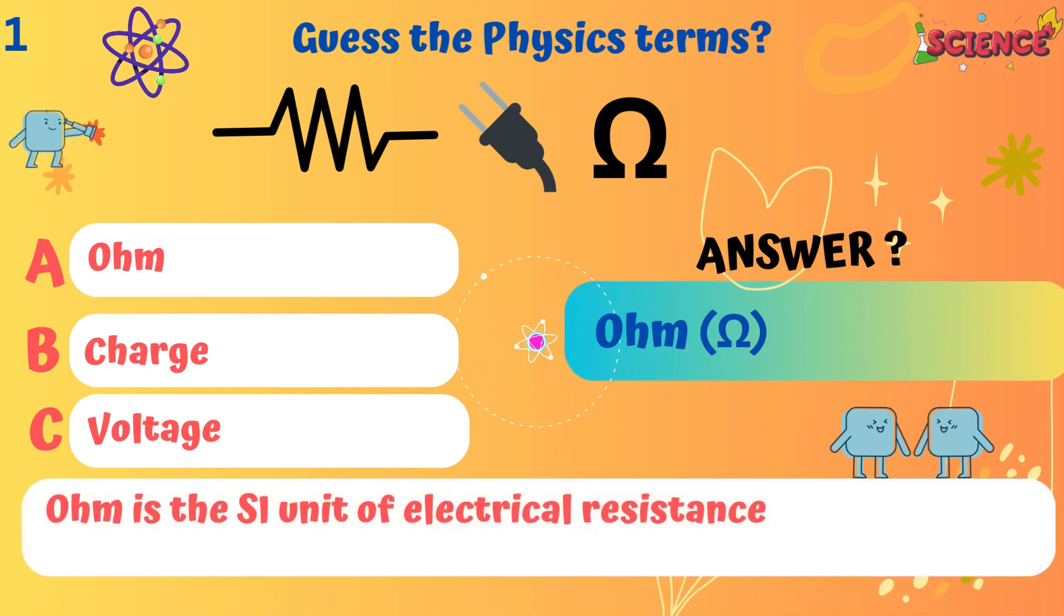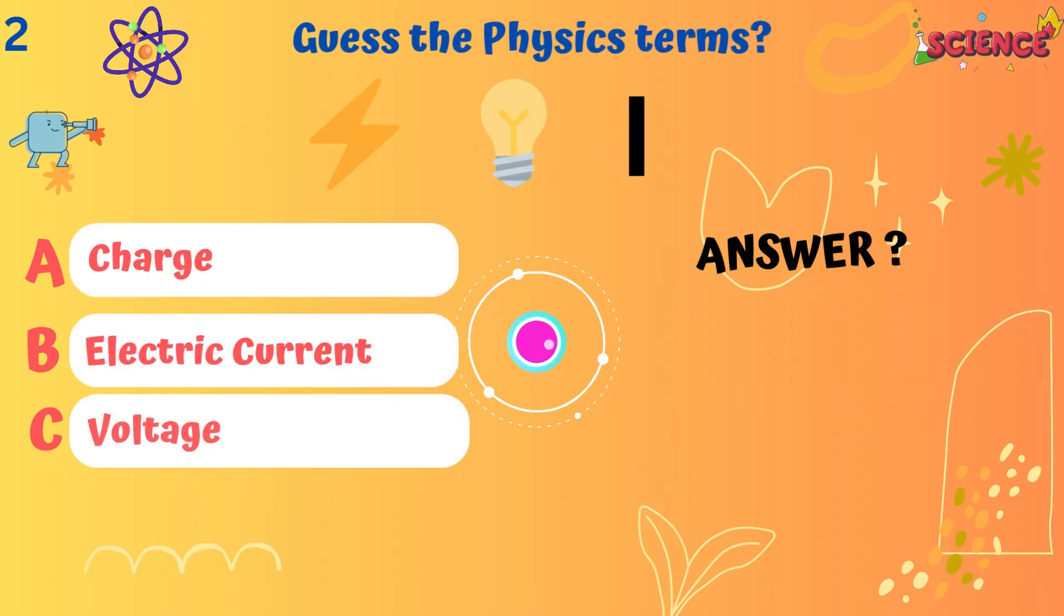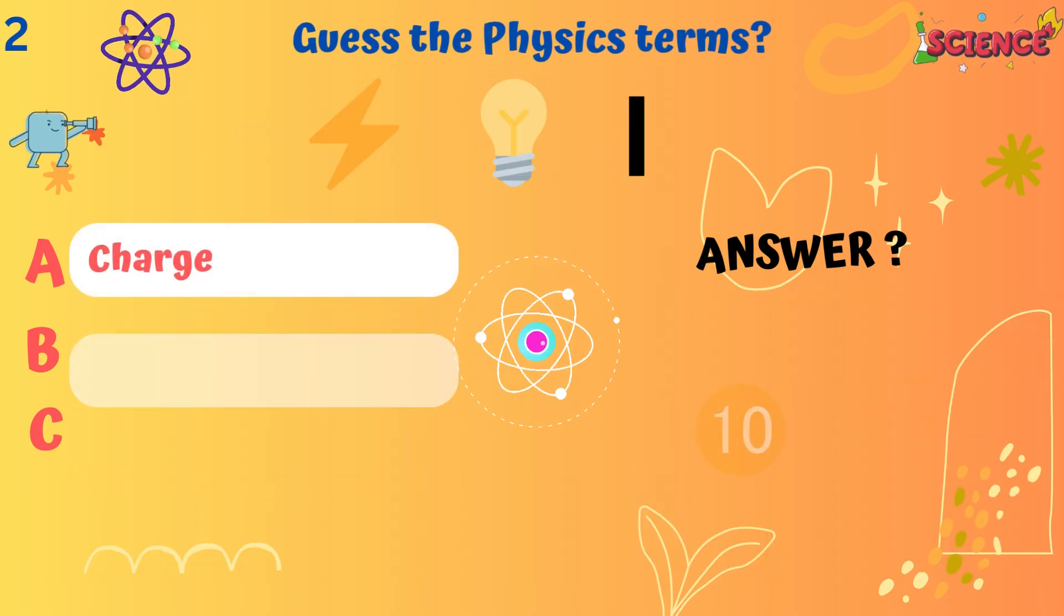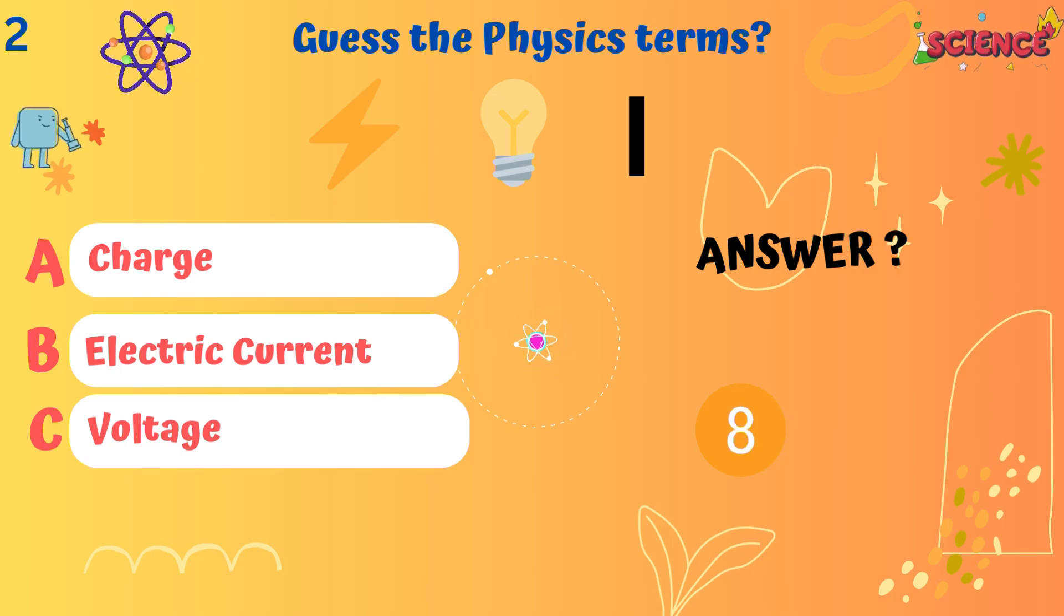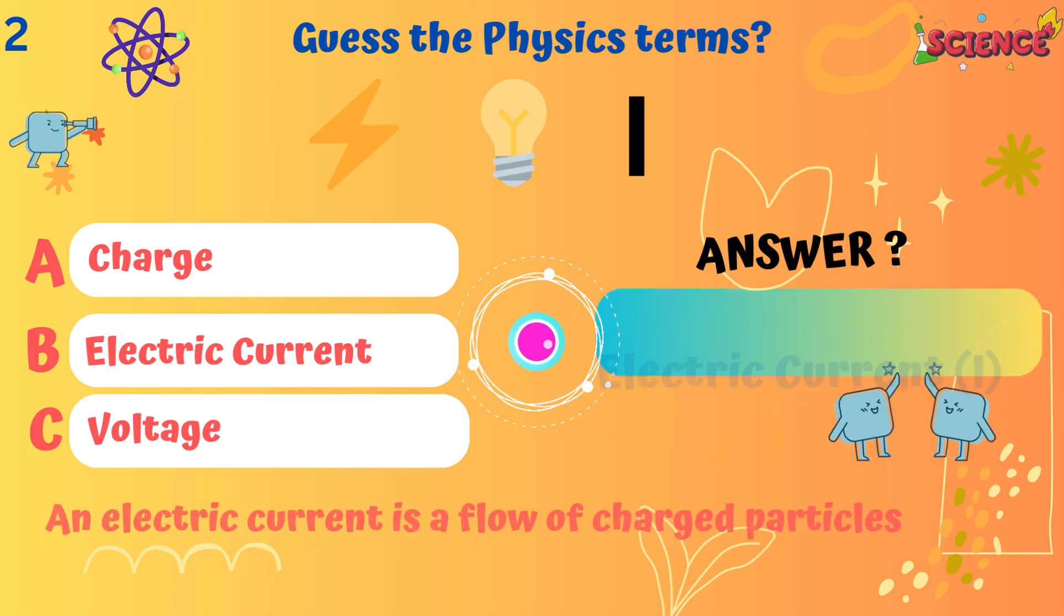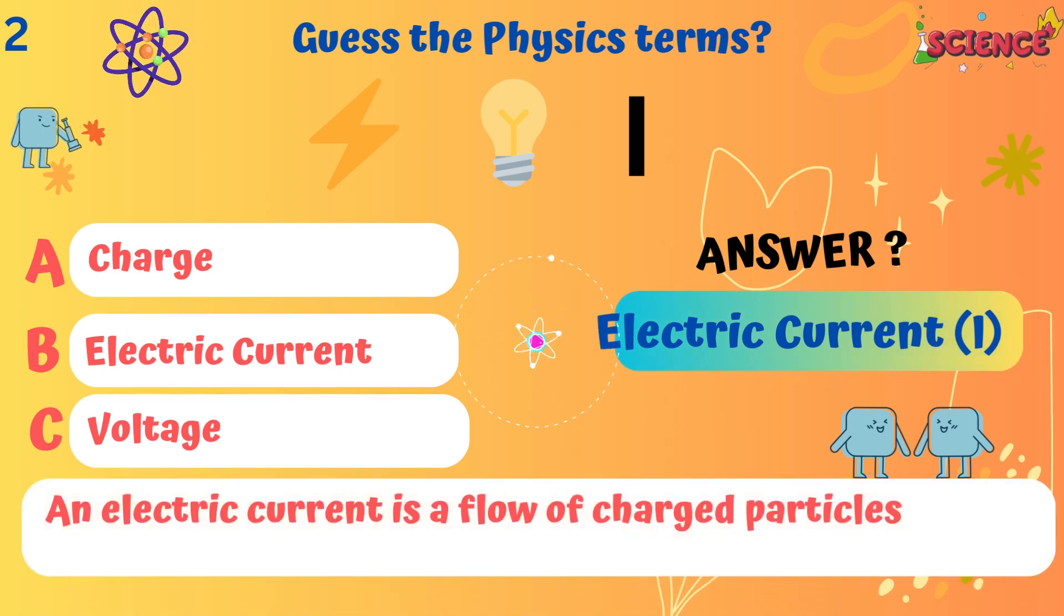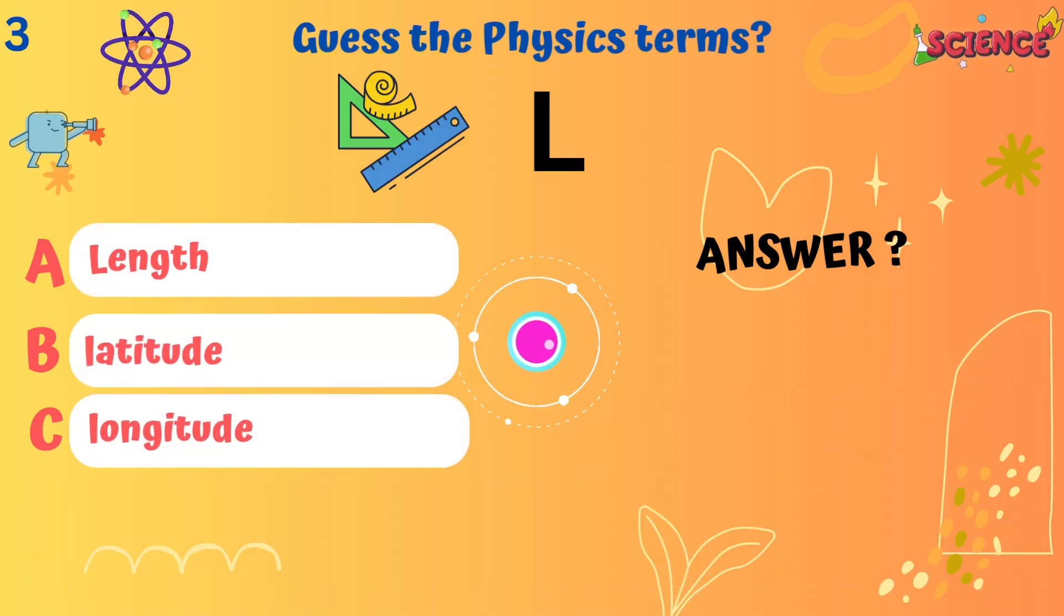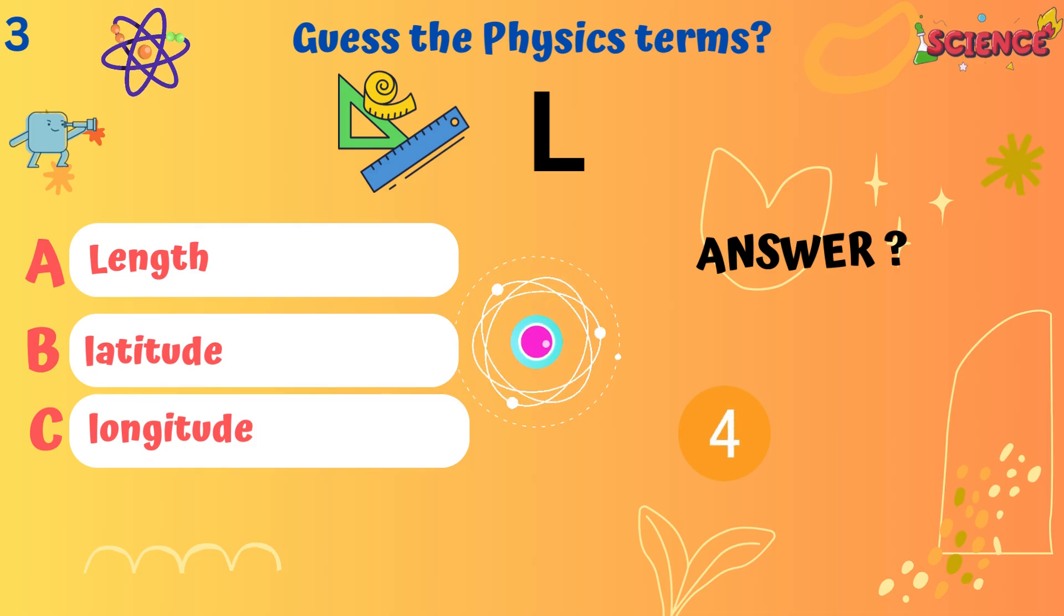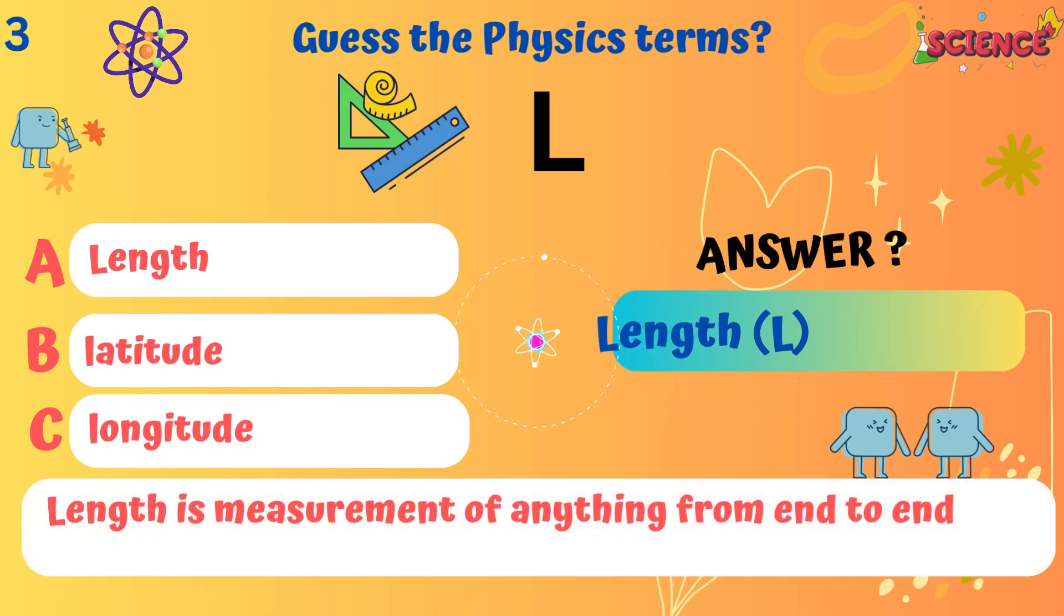Ohm. Ohm is the SI unit of electrical resistance. Electric current. An electric current is a flow of charged particles. Length. Length is measurement of anything from end to end.